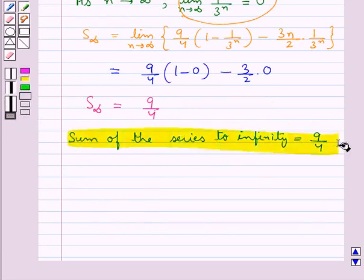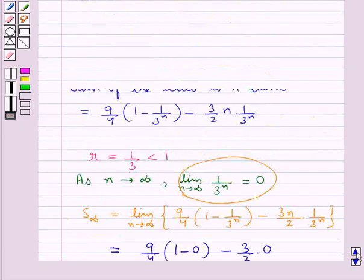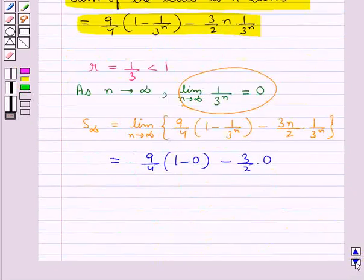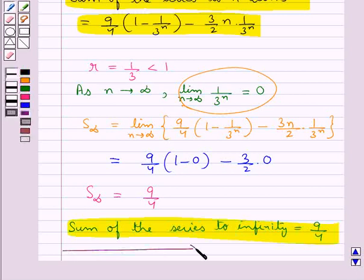So our final answer is: the sum of the series to infinity is 9 upon 4, and we have also found the sum of the series to n terms. This completes the session. Hope you have understood the solution of this question.